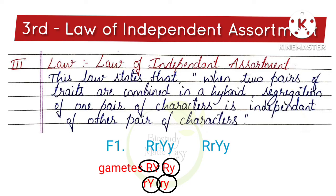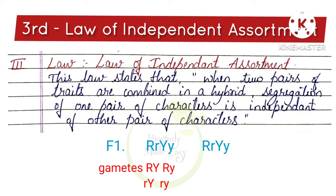For example, seed shape and seed color are related to the F1 hybrid — that is capital R, small r, capital Y, small y. Two characters are combined in F1 hybrid: seed shape and seed color.